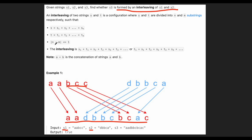Probably the most important requirement is that when we separate S1 into n parts and S2 into m parts, the difference between n and m should be equal to or less than one. So they should be separated into equal parts, or the difference between parts should be one. In this case, we split S1 into three parts and S2 into two parts, so the difference is one.